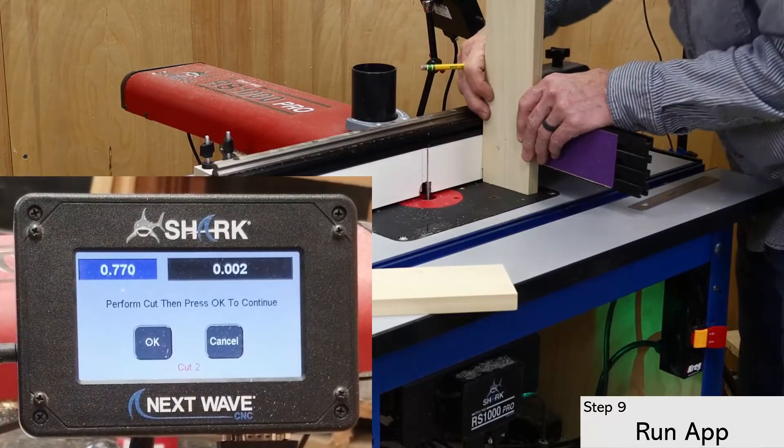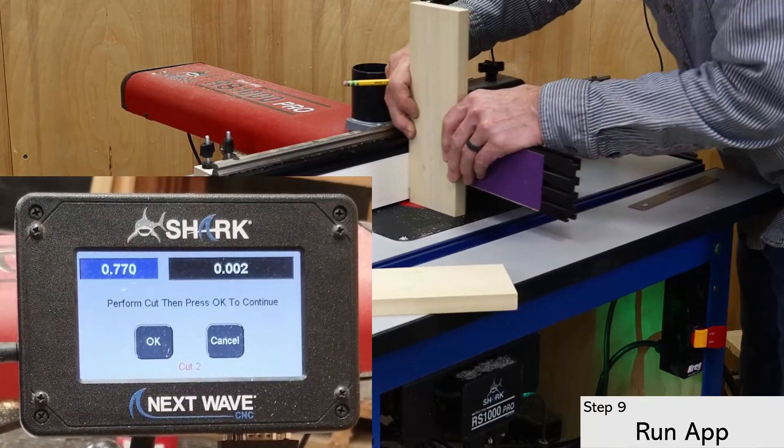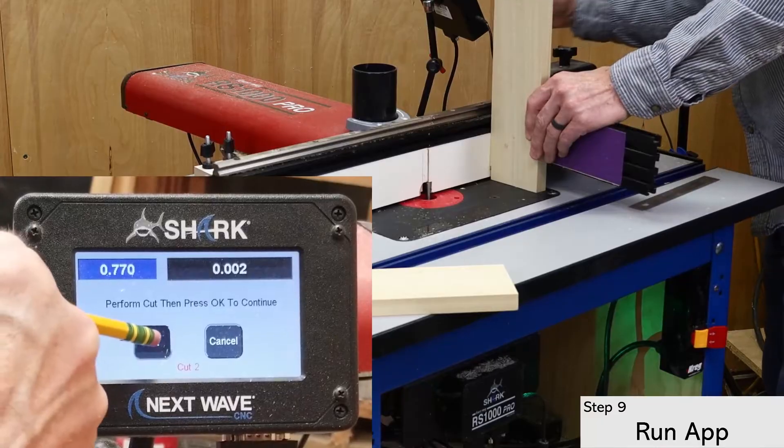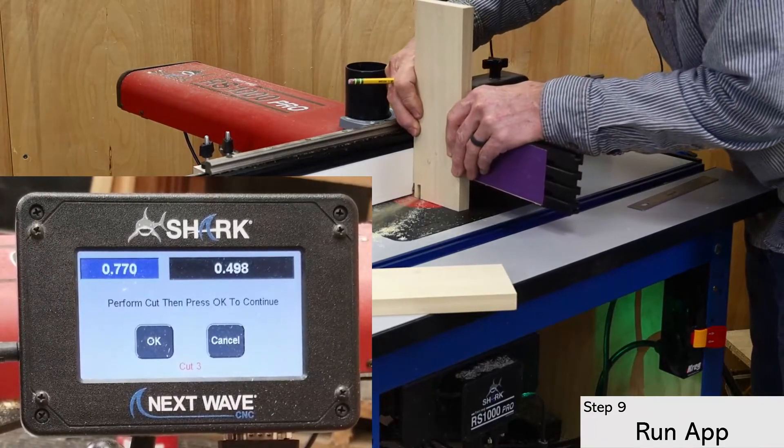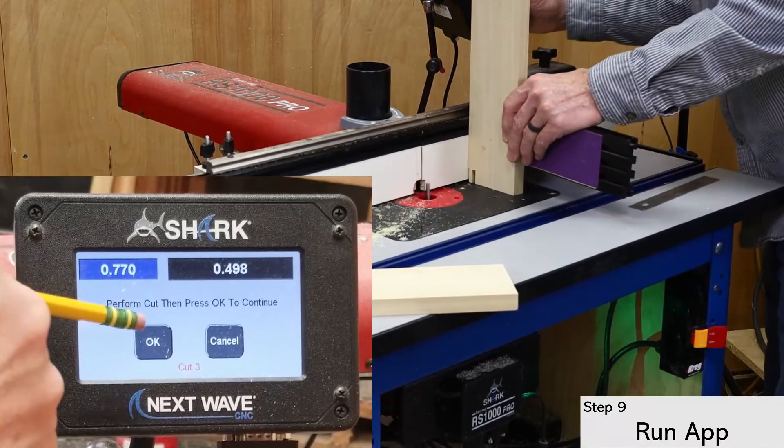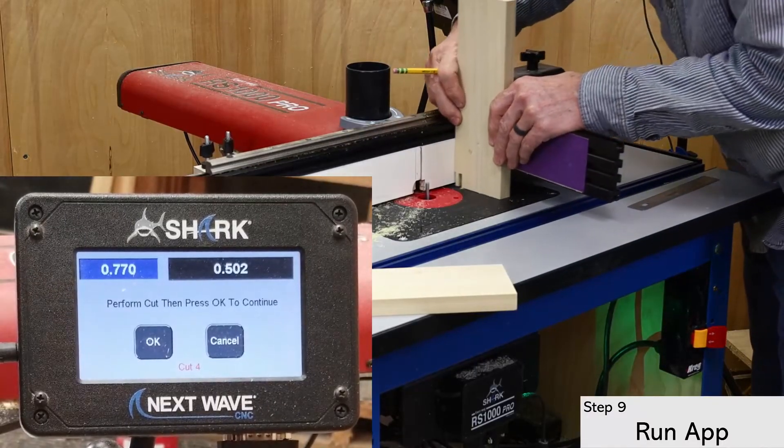The app automatically does the math to center the fingers on your materials, so the width of the first cut will vary depending on your material width and bit diameter. Click OK to advance the fence for the next cut.